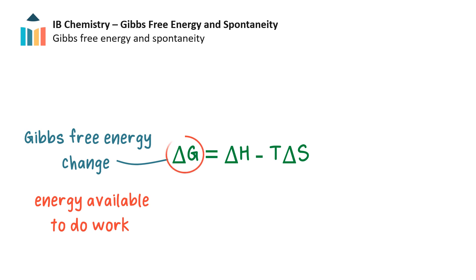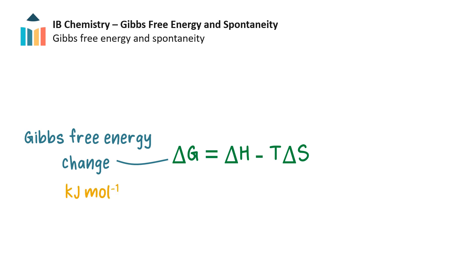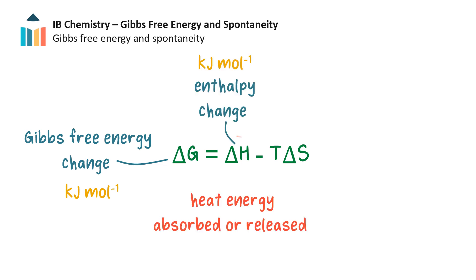Delta G, the change in Gibbs free energy of the system, is the energy available to do work. It takes into account the entropy change of the system and the entropy change of the surroundings as a result of heat transfer to or from the surroundings. It uses units of kilojoules per mole, as does enthalpy change.